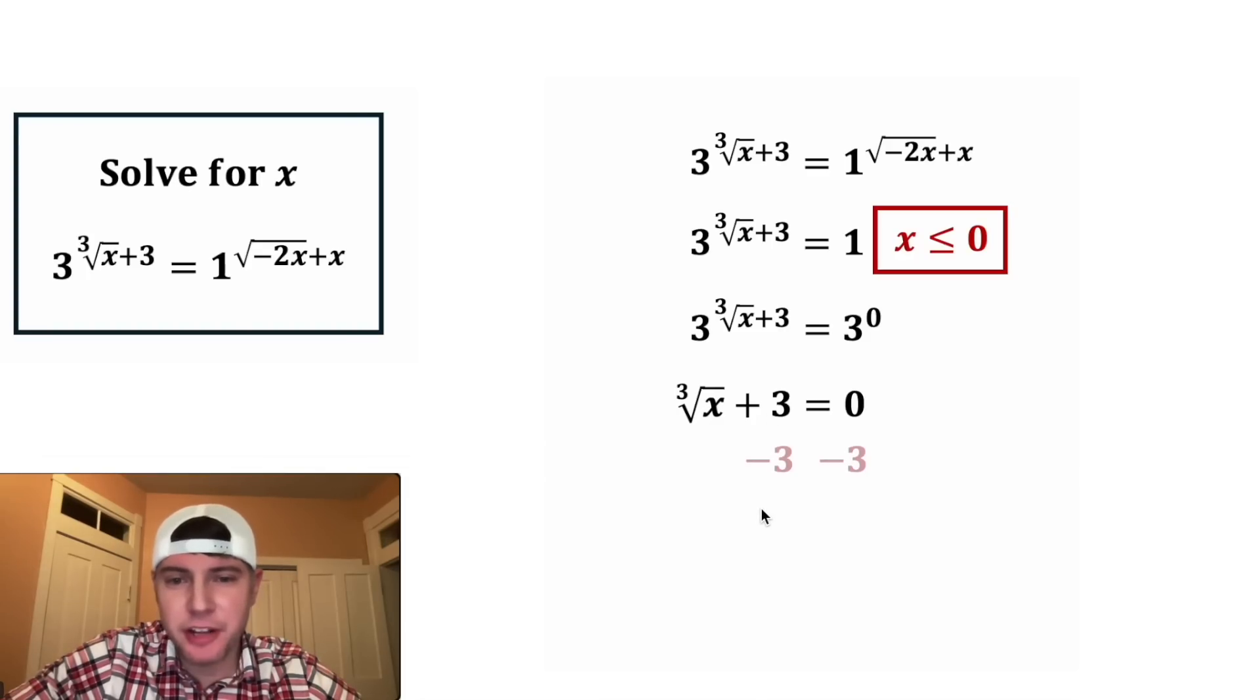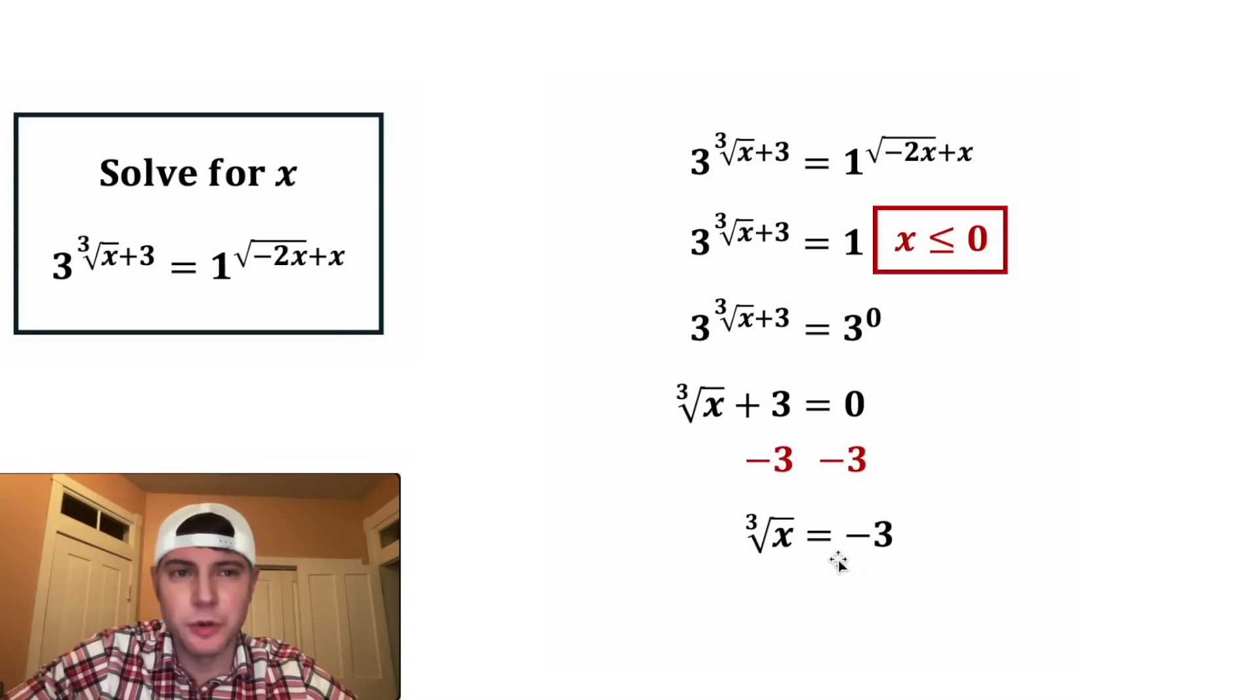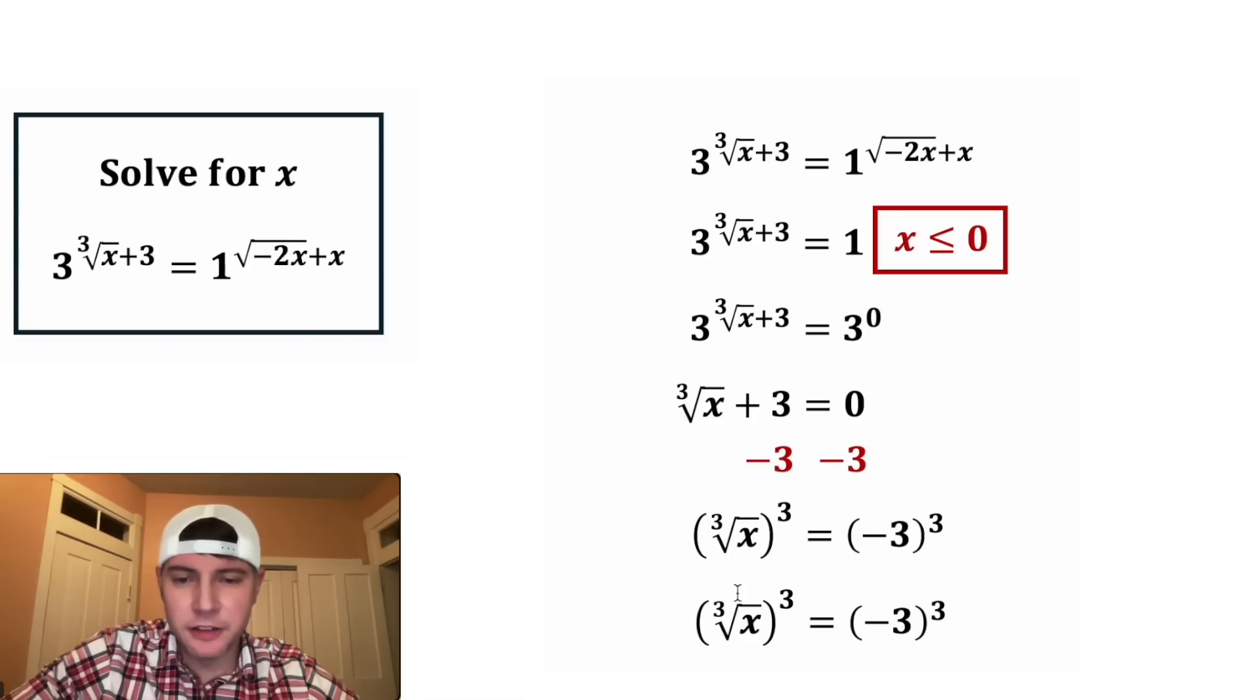And now from here, we can subtract 3 from both sides of the equation. That'll give us cube root of x equals negative 3. And then to get the x all by itself, we can cube both sides. On the left-hand side, the cube root and the cube will cancel each other out, leaving us with x. And then on the right-hand side, negative 3 cubed is negative 27.